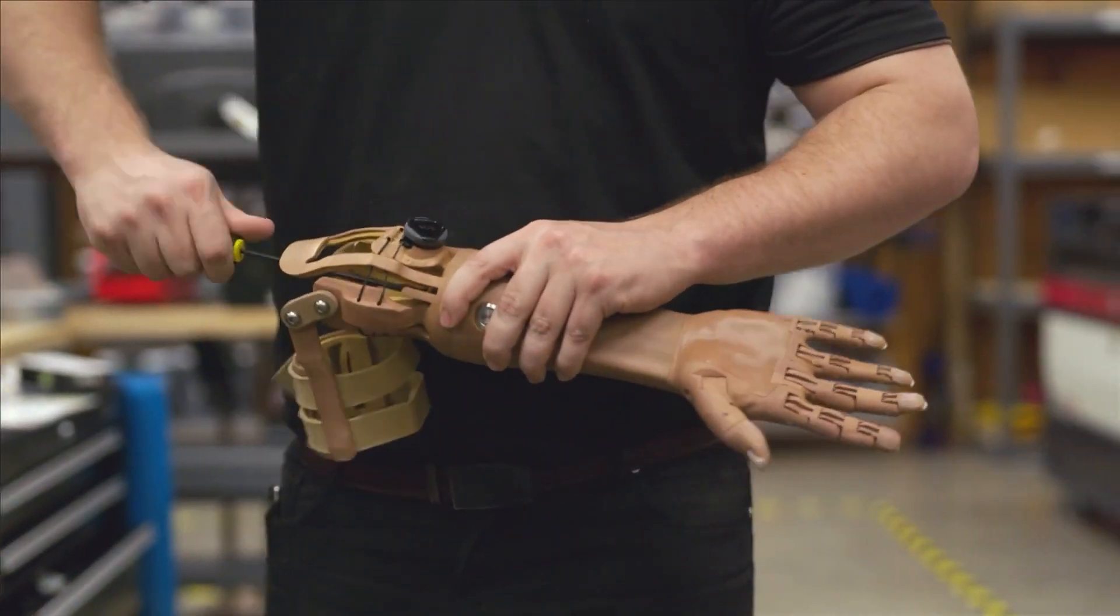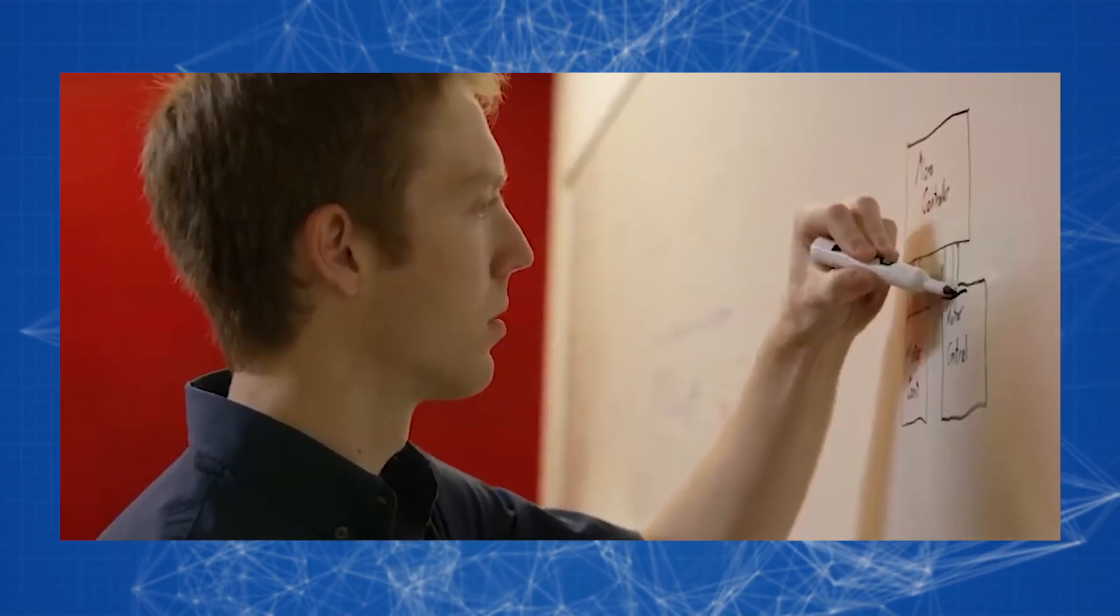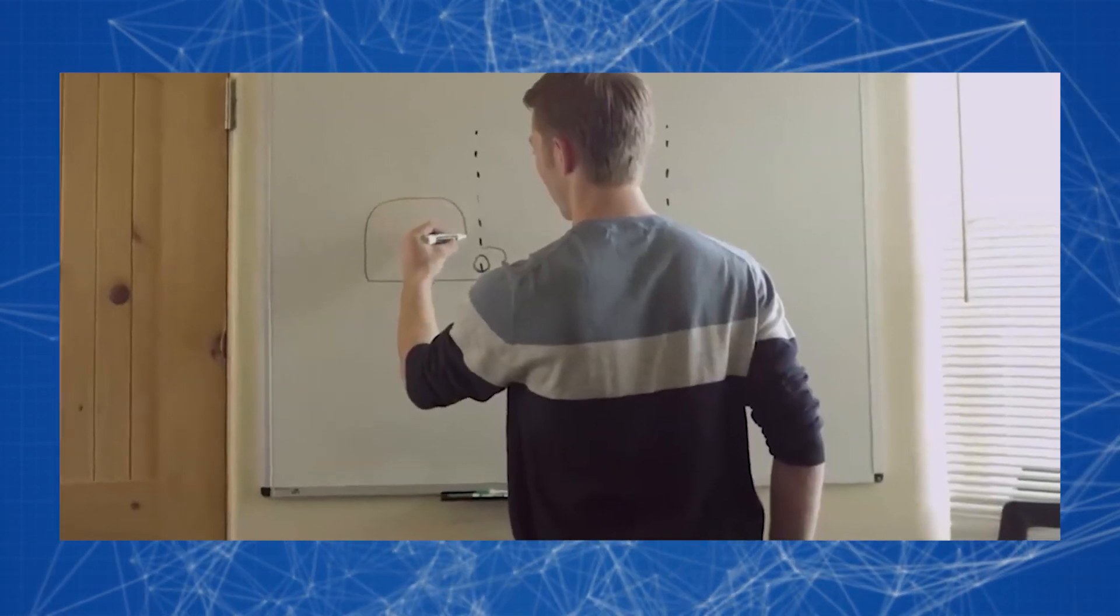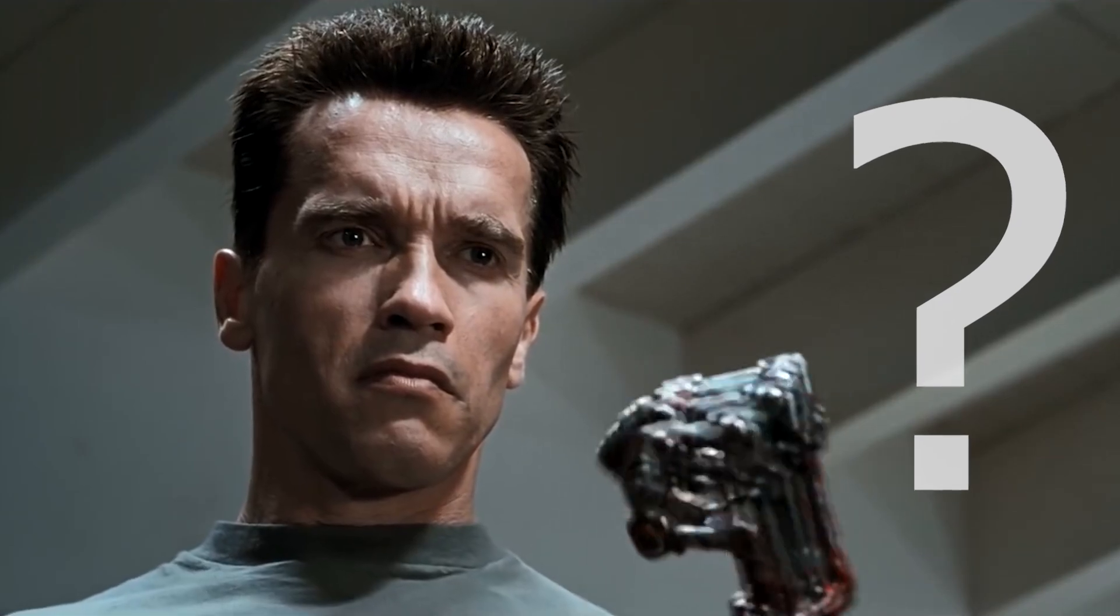And sometime later, the story of the young inventor inspired the world-famous business coach Tony Robbins so much that he decided to support Easton, initiated a fundraiser for 50 prostheses on the Indiegogo crowdfunding platform, and paid for another 50 prostheses from his budget. So what's so outstanding about the young genius LaChapelle's creation?